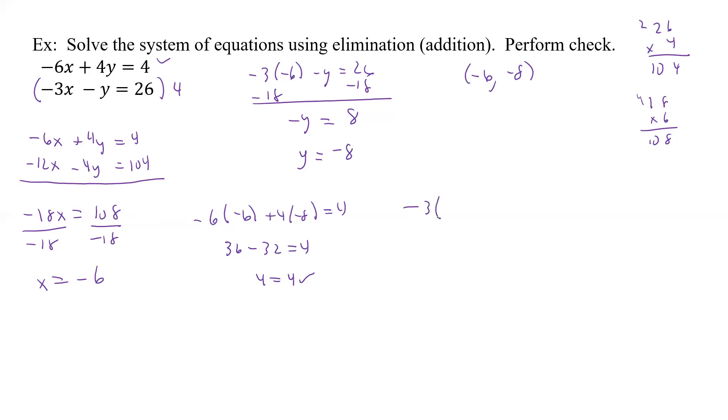All right, minus 3 times x, which was a negative 6, and then minus a minus 8 equals 26. Well, that's 18 plus 8 equals 26. And 8 and 8, 16 carry the 1. That's a 26 equals 26. So that works as well. So it's independent and consistent. So that's another one we can solve and get a nice independent consistent system using our checks to make sure we have the correct answer.